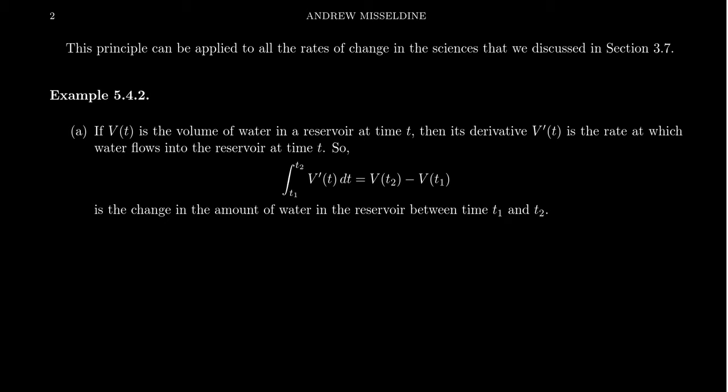If we consider the volume of water in a reservoir with respect to time, we call that V of T. What's the volume with respect to time? Well, then its derivative, V prime of T, is the rate at which water flows into the reservoir at time T. This rate of change would be the net flow, because you might have some water entering, some water exiting. But V prime T is measuring the flow of water into the system.